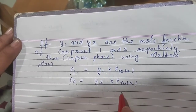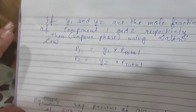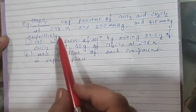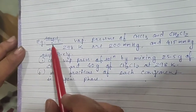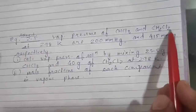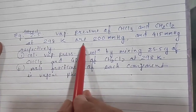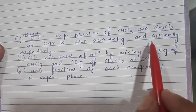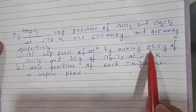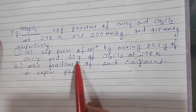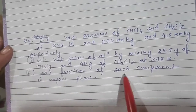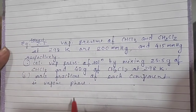Now let us solve example 2.5 from the textbook. The question is: vapor pressure of CHCl3 (chloroform) and CH2Cl2 (dichloromethane) at 298 K are 200 mmHg and 415 mmHg respectively. Calculate the vapor pressure of the solution formed by mixing 25.5 g of CHCl3 and 40 g of CH2Cl2 at 298 K. The second part asks for the mole fraction of each component in the vapor phase.